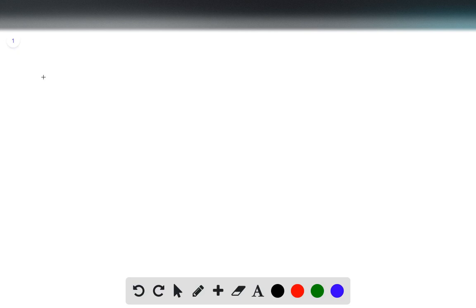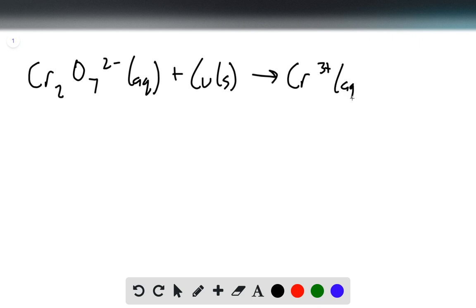This problem gives us the unbalanced redox reaction: Cr2O7^2- (aq) + Cu (s) → Cr^3+ (aq) + Cu^2+ (aq), and wants us to balance it and